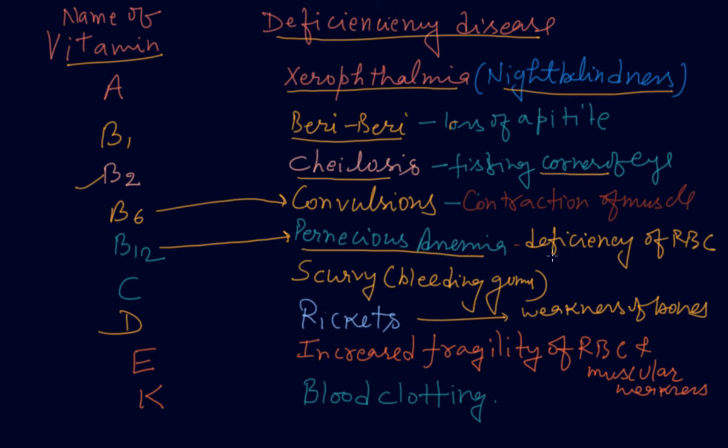Then vitamin C gives you scurvy, that is bleeding gums. Vitamin D causes rickets. Vitamin E increases the fragility of RBC and causes muscular weakness.